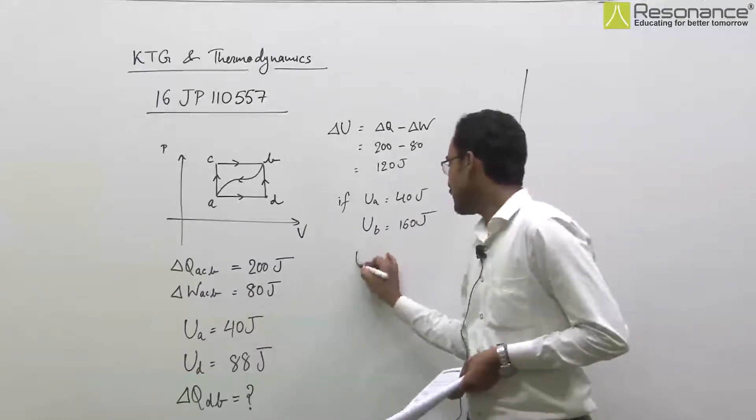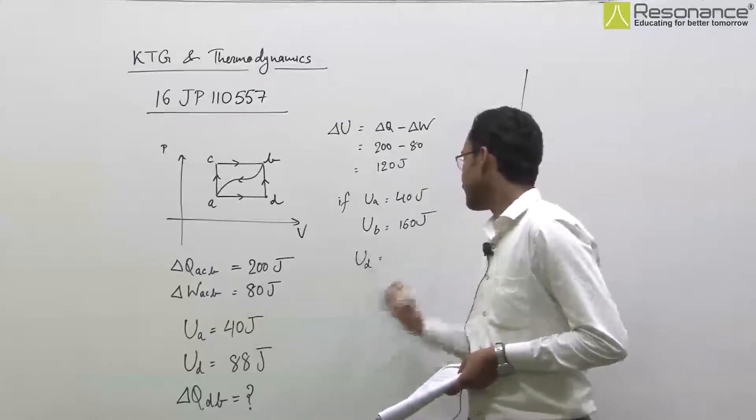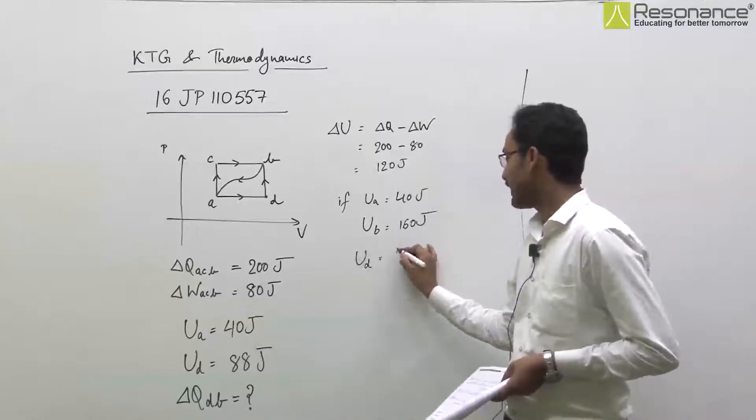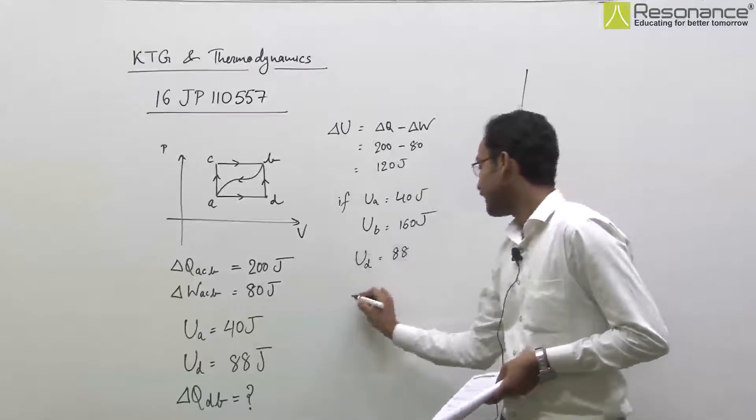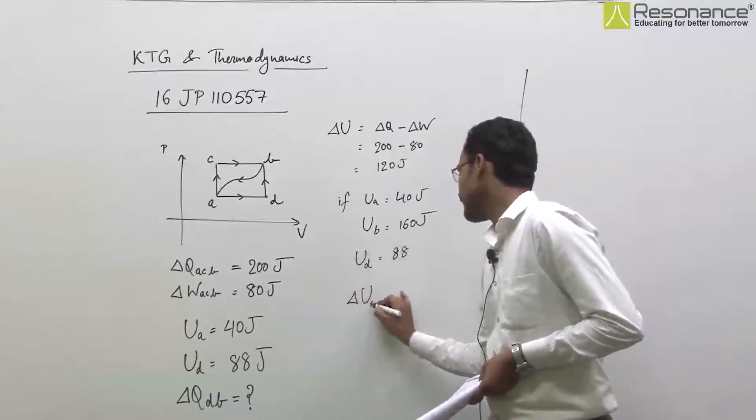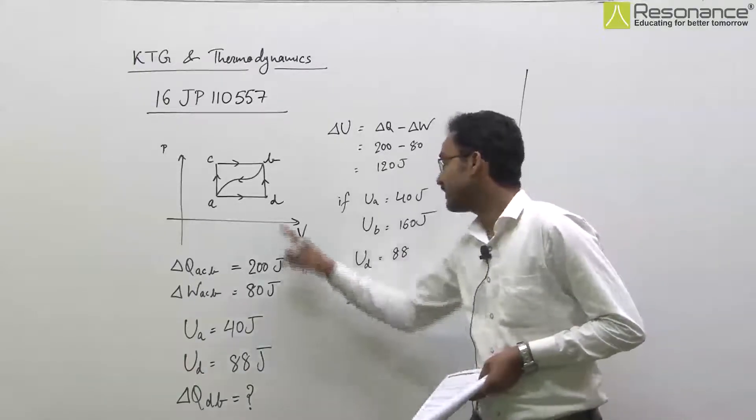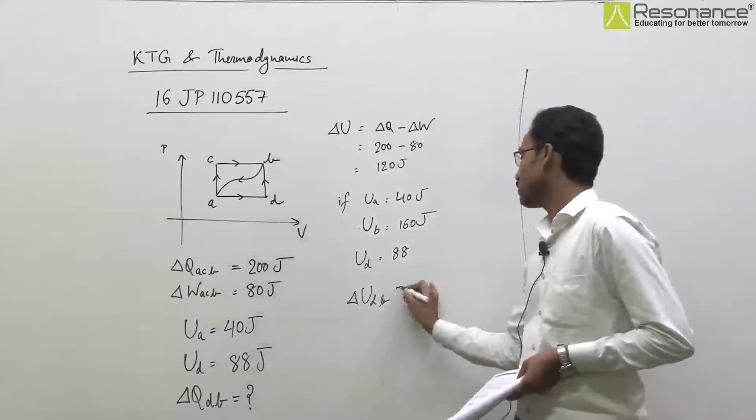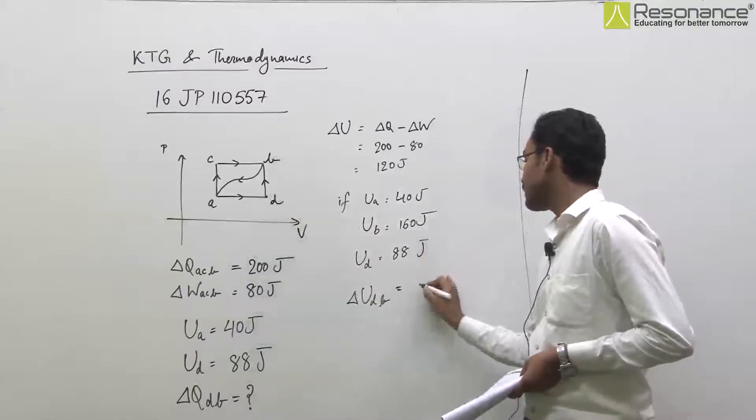Now, UD is equal to 88 joule. Then delta UDB, D se B tak jane mein, jo internal energy mein change hoga